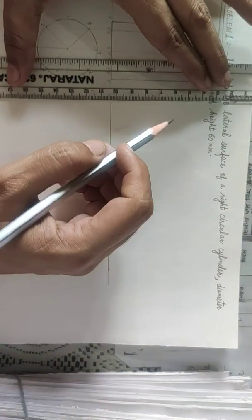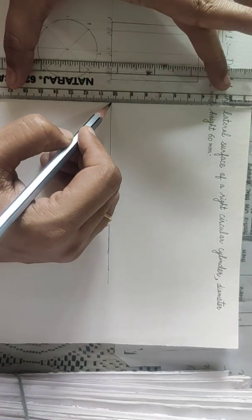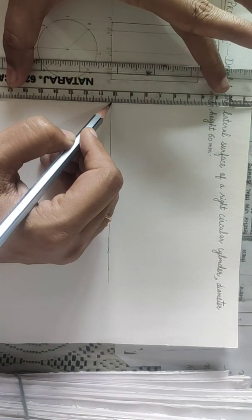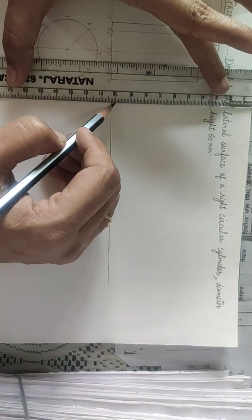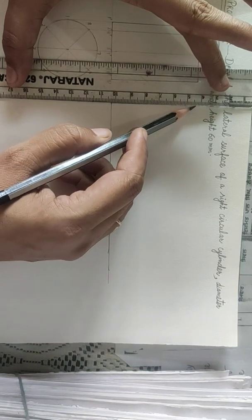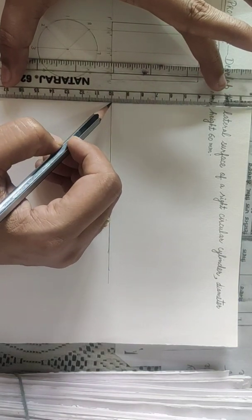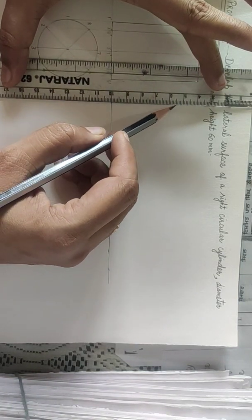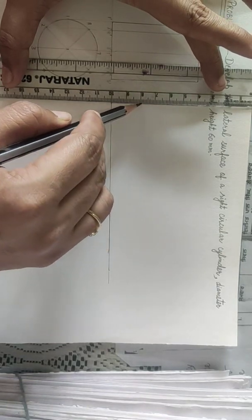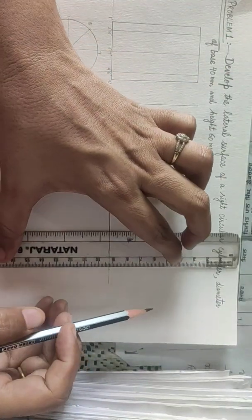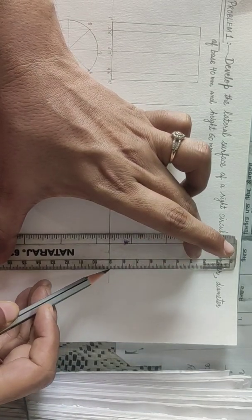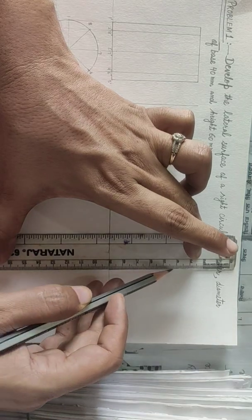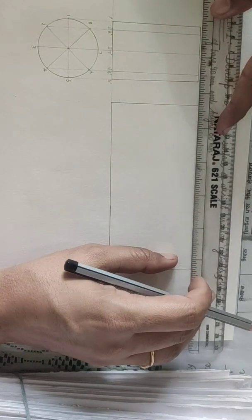Then we will again give the height to this developed part. Height is same as 60 which is given. So we can extend and match the ends.